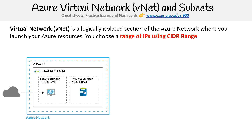Here is a graphical representation of your VNet. So here we have the Azure network, and within that we have a region — US East — and then we would create our virtual network so that we can launch our Azure resources within it. In there we have two subnets: a public one and a private one.